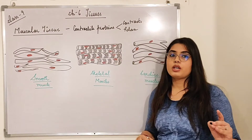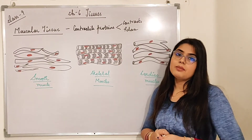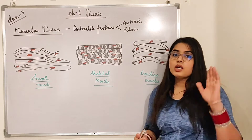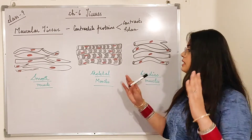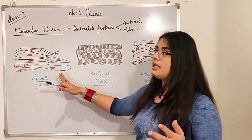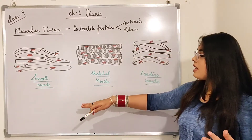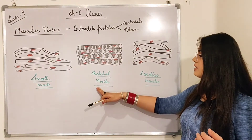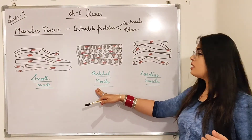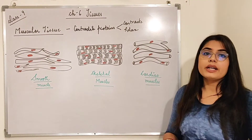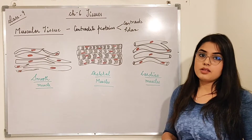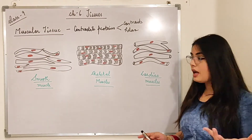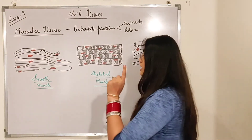Here you can see I have three particular diagrams. The first one is of a smooth muscle, the second is of the skeletal muscle, and the last one is of the cardiac muscles. Now we will be studying them in detail.